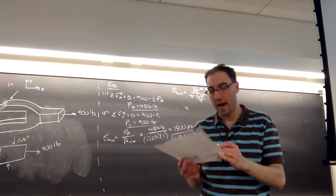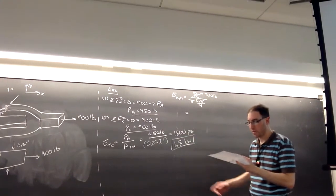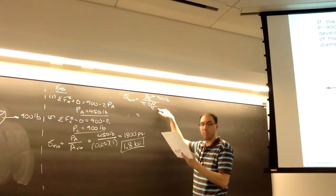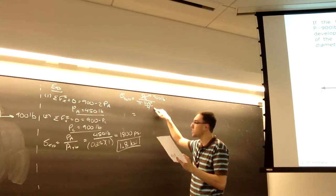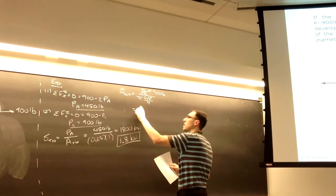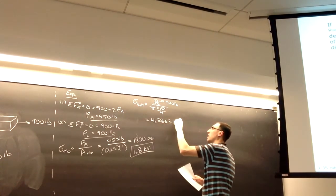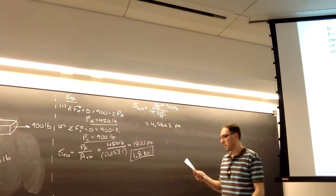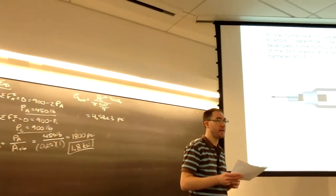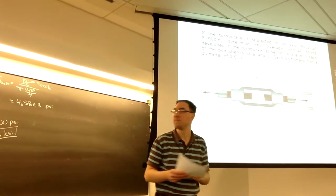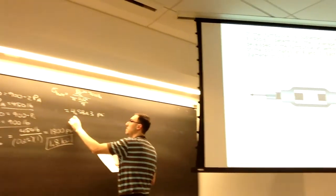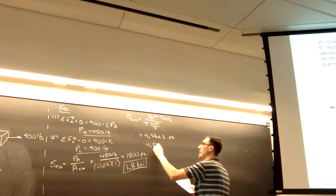Carrying through that calculation, the denominator, if you want to write it in your notes, to three digits, this would be 0.196 square inches. We have 4.58 times 10 to the third PSI. Again, we can write that more simply as 4.58 KSI.